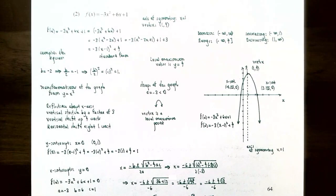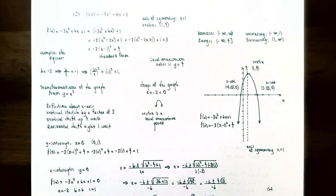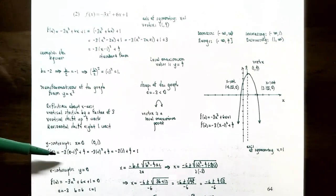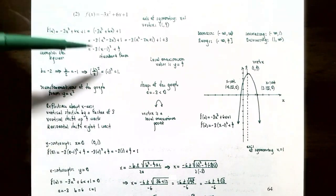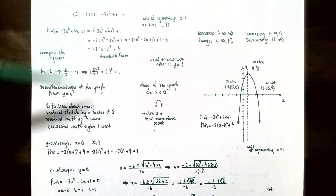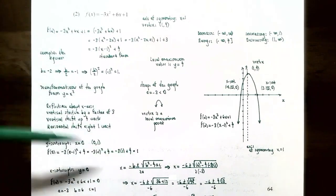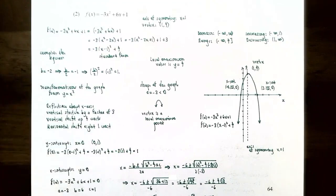For the y-intercept, substitute x = 0: f(0) = −3(0 − 1)² + 4 = −3(1) + 4 = 1. So the y-intercept is (0, 1).